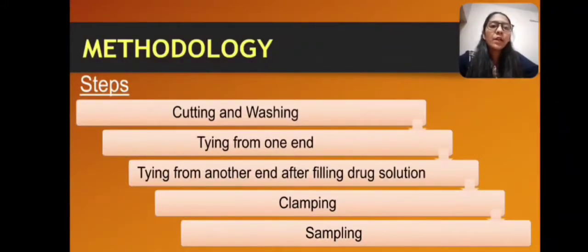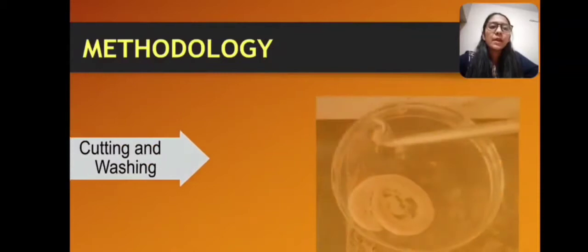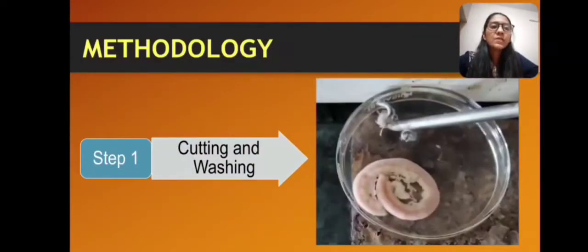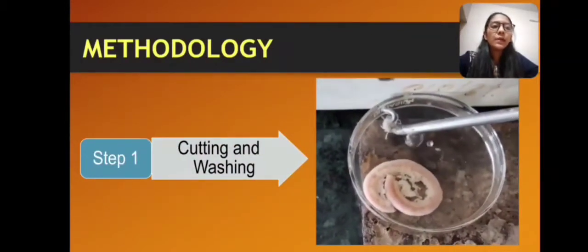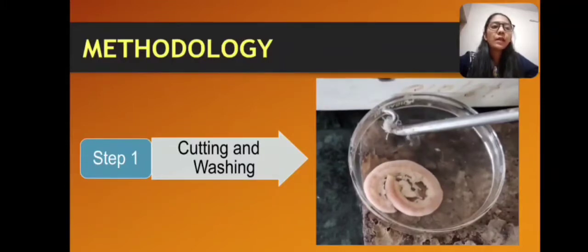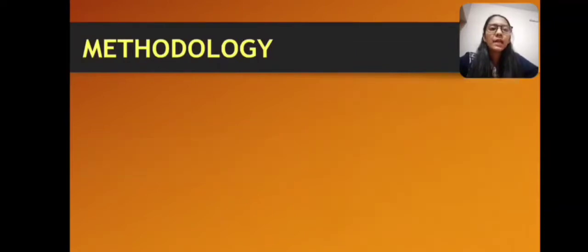Now let's see the methodology to perform each step. Step one is cutting and washing. As we can see in the video, we have to isolate the ileum and the segment is to be cut in 8 to 10 centimeter length. Then the ileum is to be properly cleaned and washed with a buffer solution. Step two is tying from its one end before injecting the drug solution, and during this process aeration is to be provided continuously.